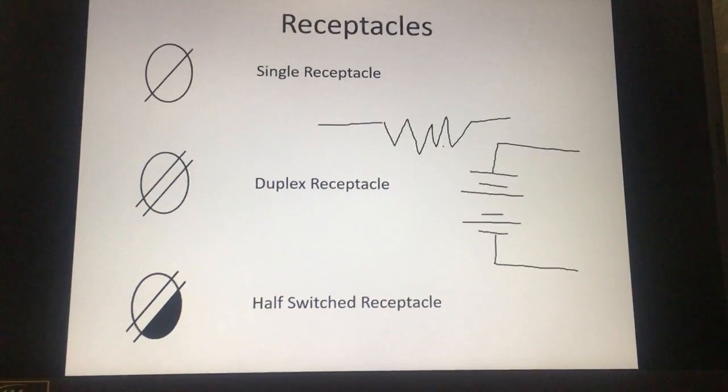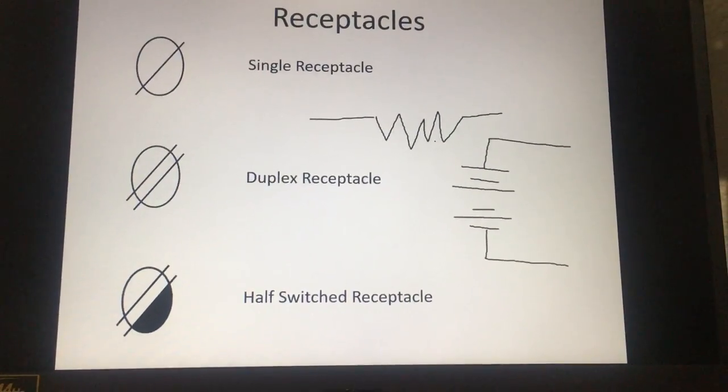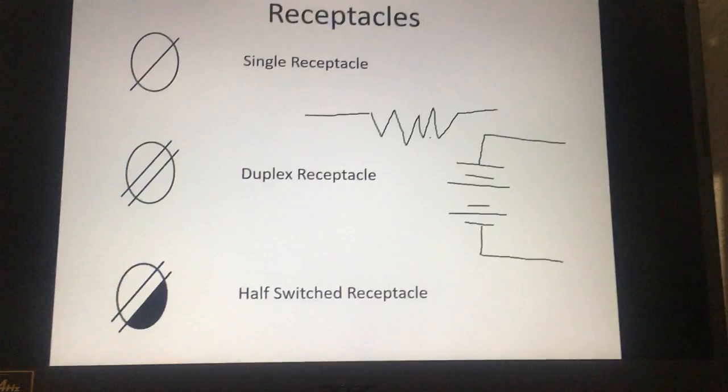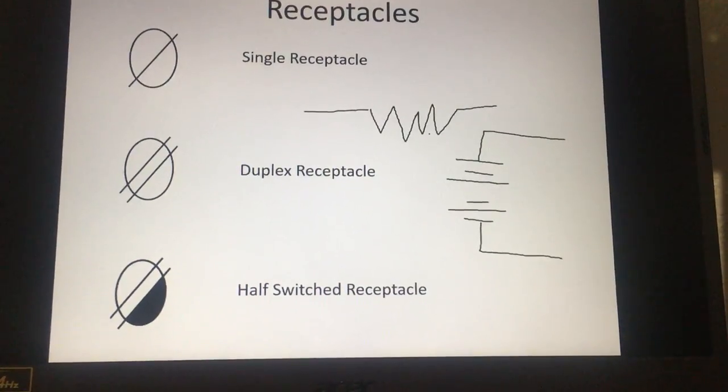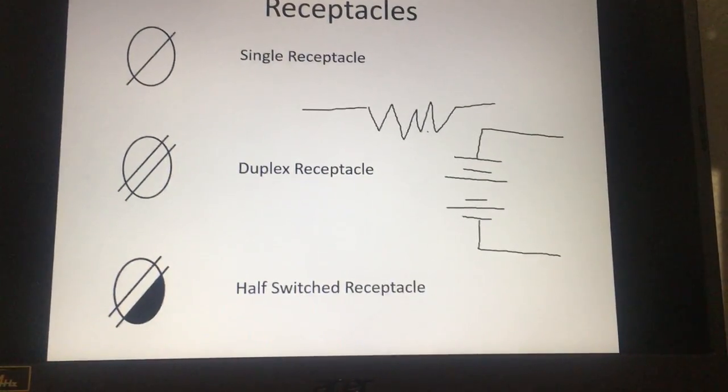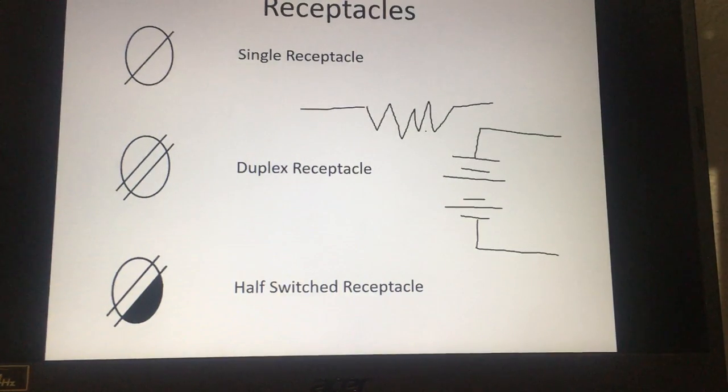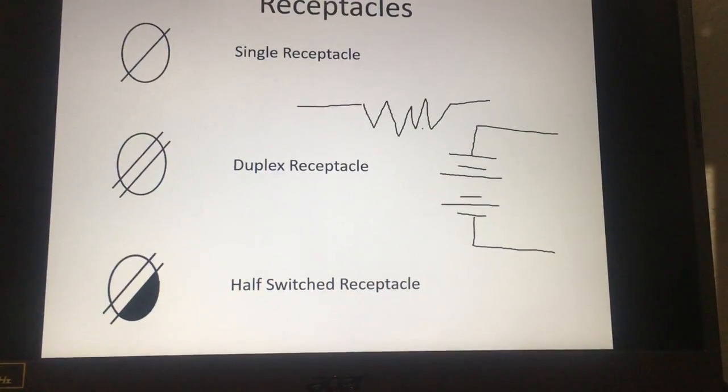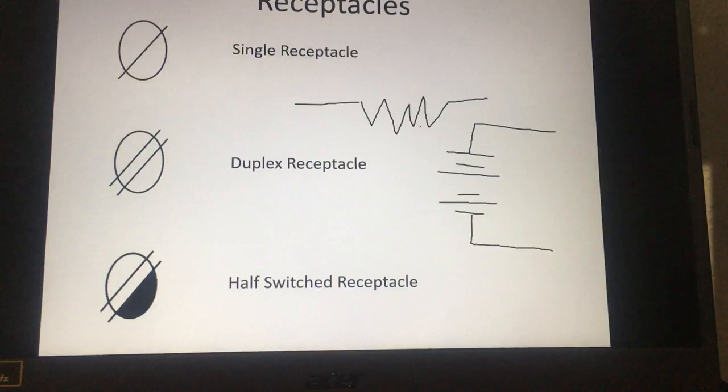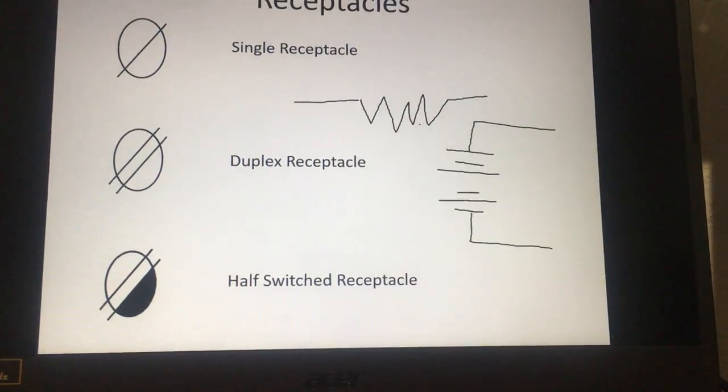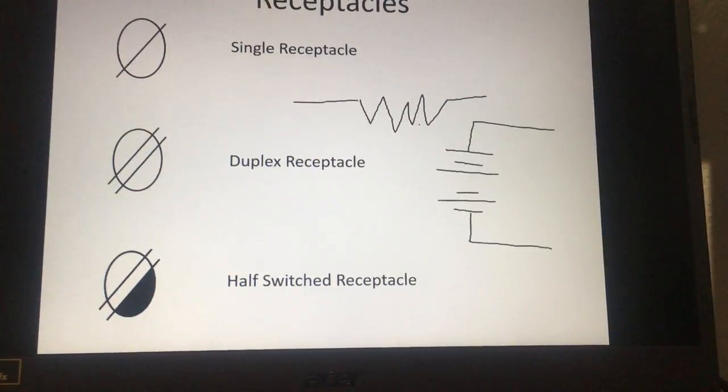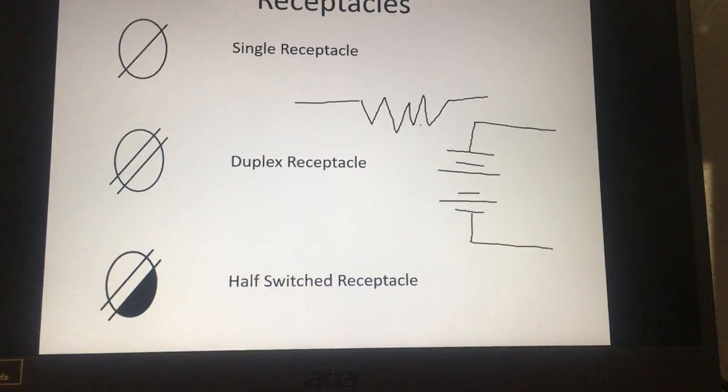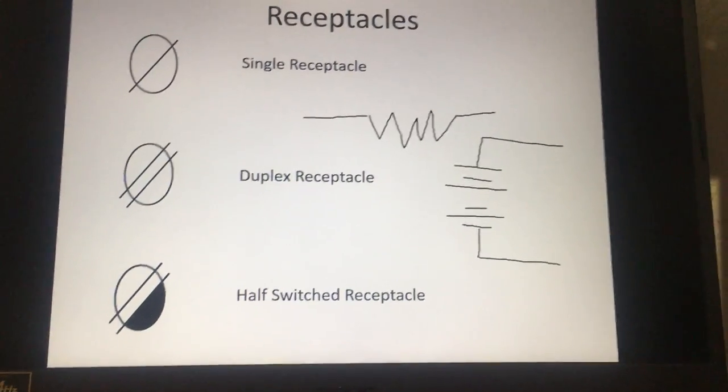But every circuit has to have some type of a load because there's three things you need for a circuit minimum. You need a source which is your battery, you need a path for current which is your wire, and you need a load. So for example the resistor or a light bulb or a motor or anything like that. Those are the three minimum things you need for an electrical circuit.